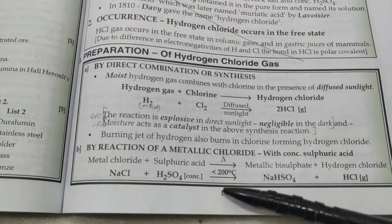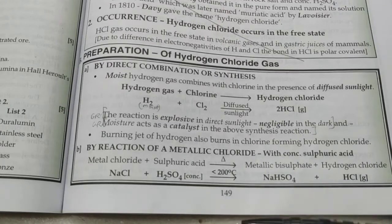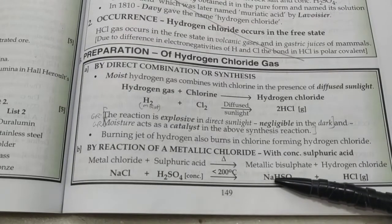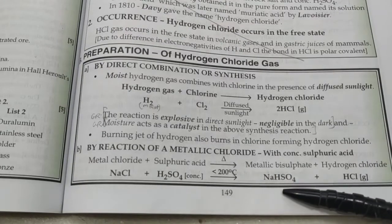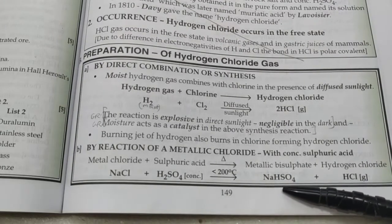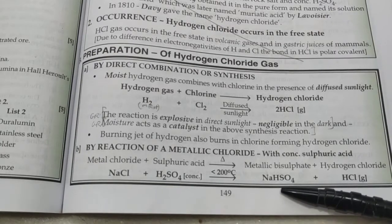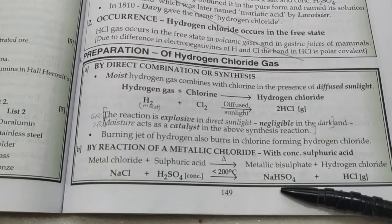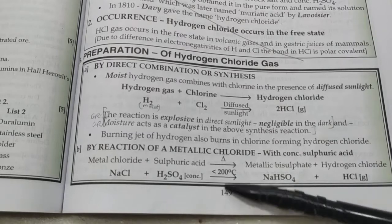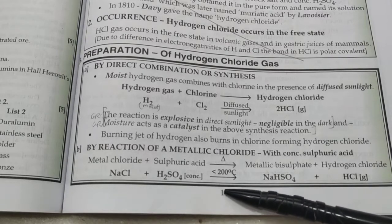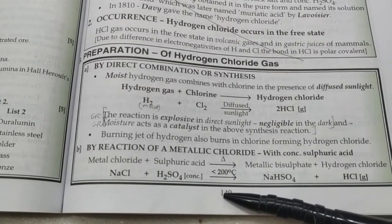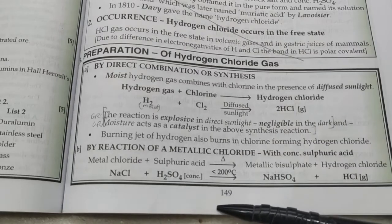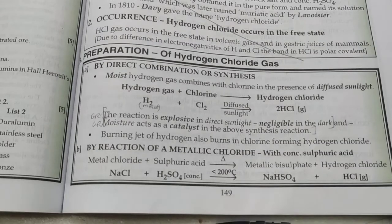If we increase the temperature to more than 200°C, instead of sodium bisulfate we get sodium sulfate, which will stick to the glass of the apparatus and the crust is difficult to remove. So we avoid that by keeping the temperature less than 200°C, saving fuel and preventing the glass from cracking.